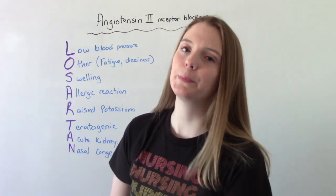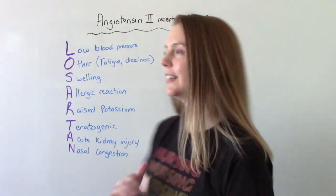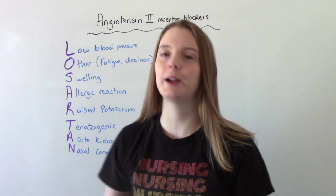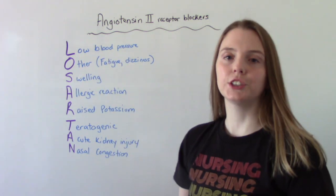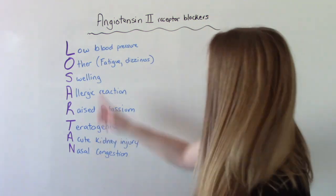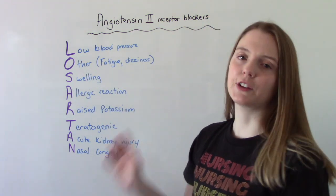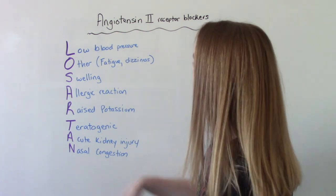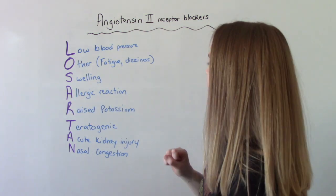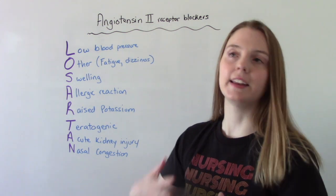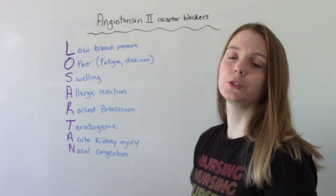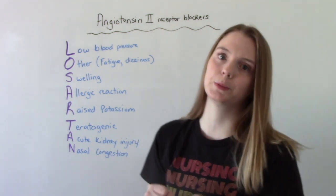A mnemonic device to help you remember the common side effects is LOSARTAN, which is the name of the medication. L is for lowering the blood pressure — that's what we want it to do, that's the point of taking these meds. O is for other things like fatigue or dizziness. S is for swelling. A is for allergic reactions — we need to check for that in any med that we give. R is for raised potassium, because remember it causes you to hold on to your potassium.